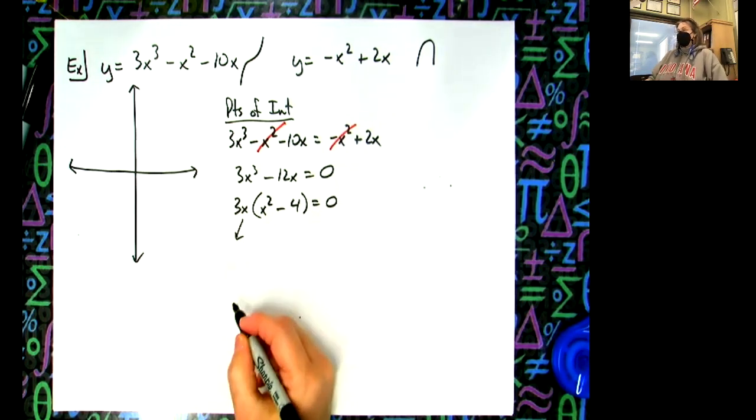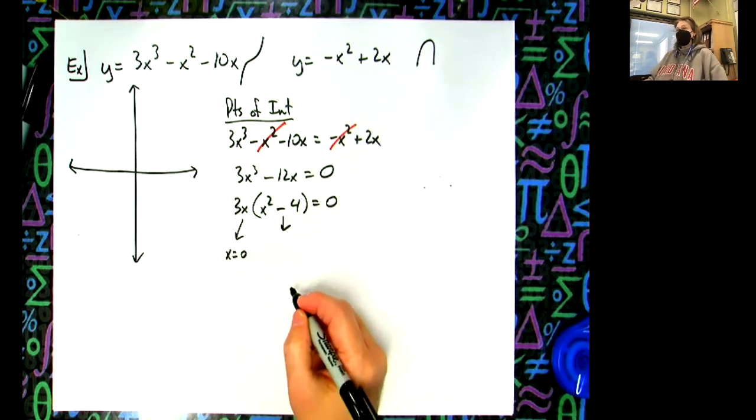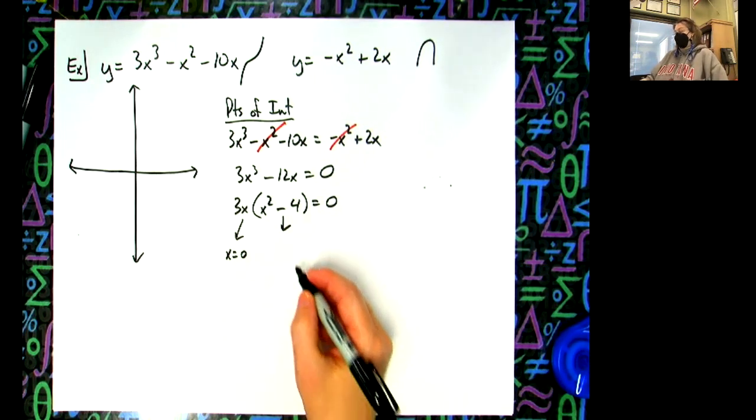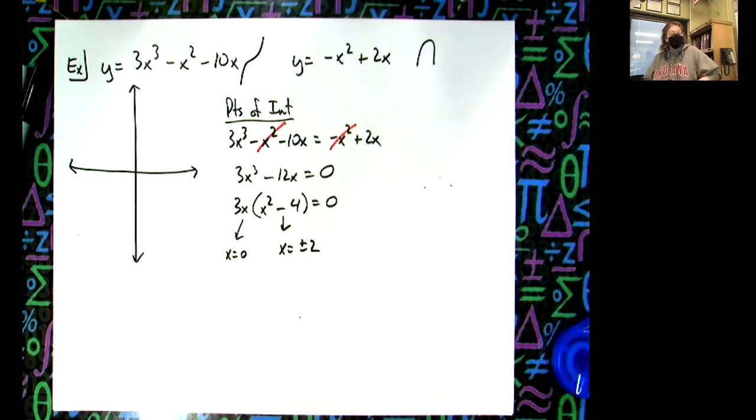So the 3x out here gives me x equals zero, and this gives me two answers: x equals plus or minus two. All right, so that's going to help a little bit then.